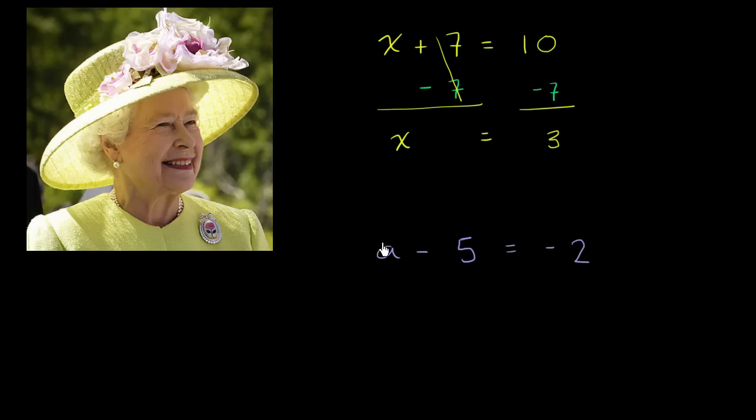We just want an a over here on the left-hand side. So we have to get rid of this negative 5 somehow. Well, the best way of getting rid of a negative 5 is to add 5 to it. So I'll do that. So I will add 5 to the left-hand side. But if I want the left-hand side to stay equal to the right-hand side, whatever I do to the left, I have to do to the right. So I'm going to have to add 5 on the right-hand side as well.